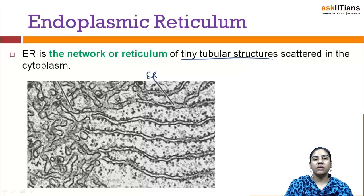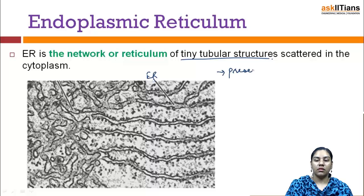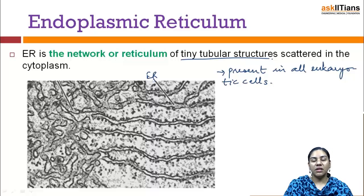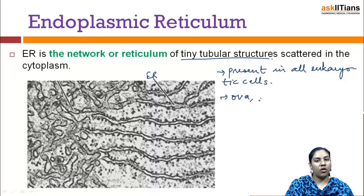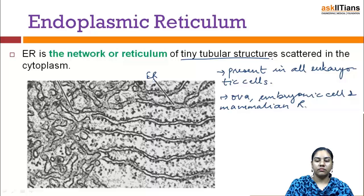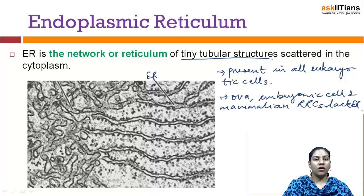This endoplasmic reticulum is present in almost all eukaryotic cells, but there are exceptions. Endoplasmic reticulum is not present in ova, embryonic cells, and mammalian RBCs — these all lack ER. The prokaryotes also lack endoplasmic reticulum. But in rapidly dividing cells, the endoplasmic reticulum is poorly developed.